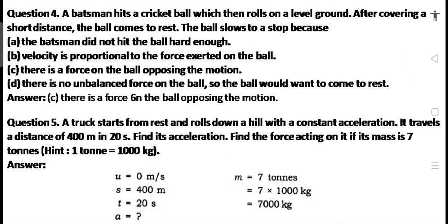Q4: A batsman hits a cricket ball which then rolls on a level ground. After covering a short distance, the ball comes to rest. The ball slows to a stop because: A — the batsman did not hit the ball hard enough; B — velocity is proportional to the force exerted on the ball; C — there is a force on the ball opposing the motion; D — there is no unbalanced force on the ball. Answer: Option C is correct. There is a force on the ball opposing the motion.